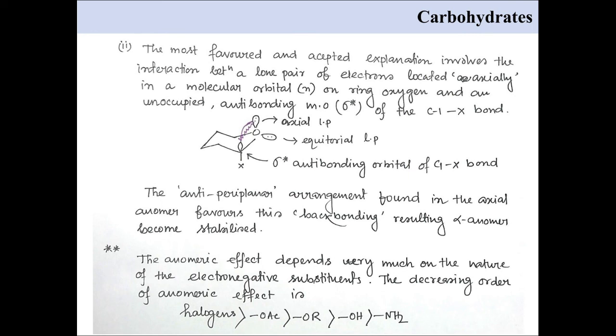The anomeric effect also depends on a few things like the electronegative substituents present at C1 or anomeric carbon. The decreasing order of anomeric effect is halogen, then OAc, OR, OH, and NH2 group.